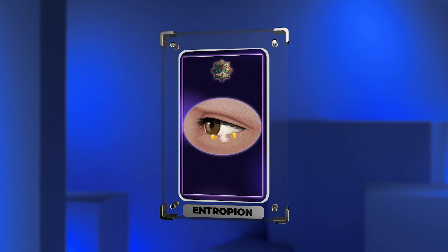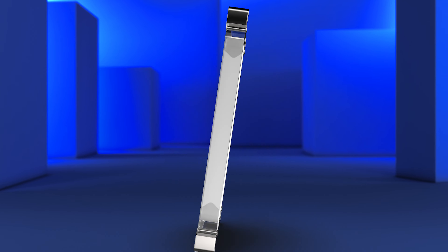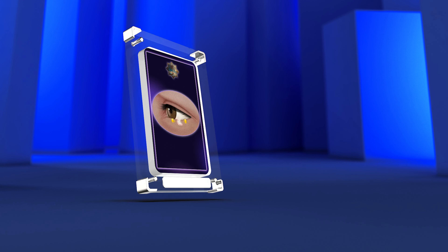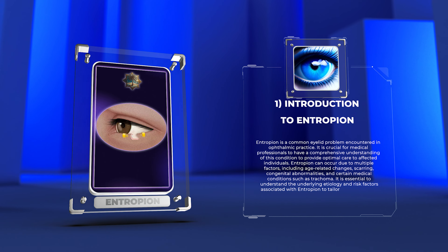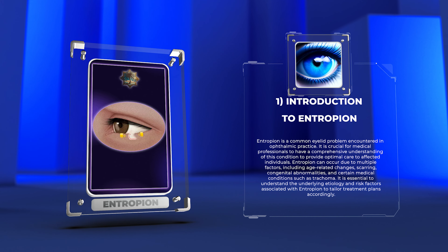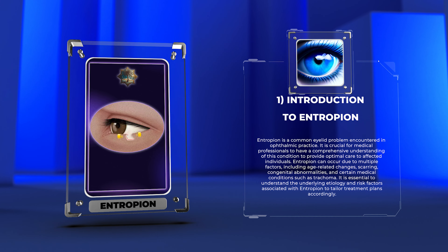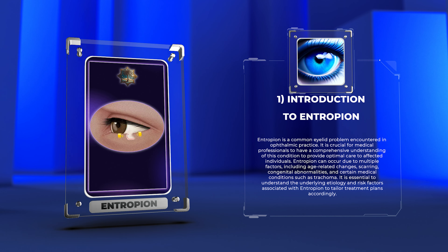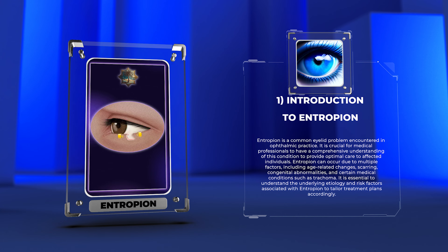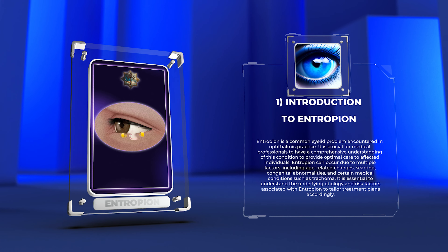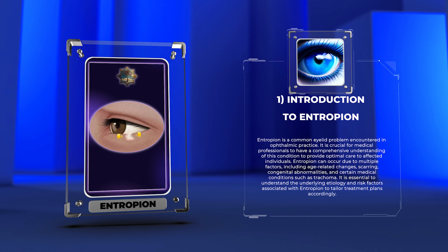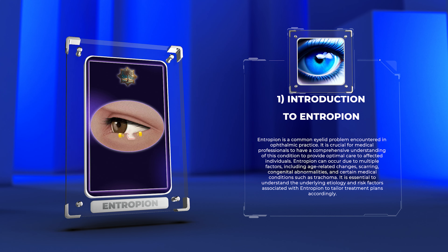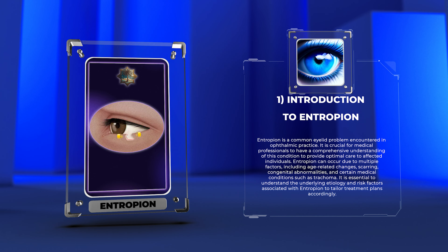Entropion is a common eyelid problem encountered in ophthalmic practice. It is crucial for medical professionals to have a comprehensive understanding of this condition to provide optimal care to affected individuals. Entropion can occur due to multiple factors, including age-related changes, scarring, congenital abnormalities, and certain medical conditions such as trachoma.